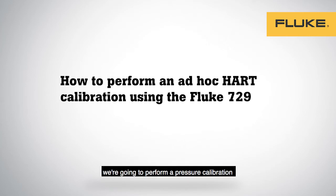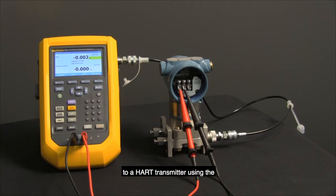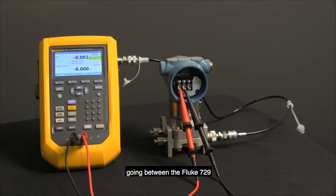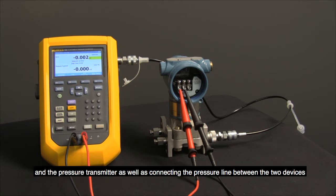In this video, we're going to perform a pressure calibration to a HART transmitter using the Fluke 729 automatic pressure calibrator. To get things connected up, you've got your 4 to 20 milliamp jacks going between the Fluke 729 and the pressure transmitter, as well as connecting the pressure line between the two devices.